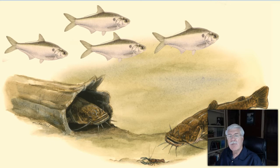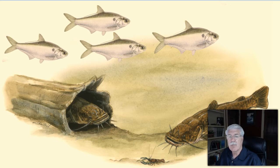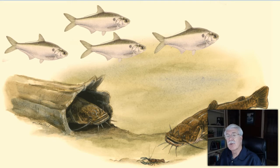Flathead catfish males guard their eggs. Once hatched, the fry remain on the nest for a week, still guarded by the male. And then the fry leave and they're off on their own.